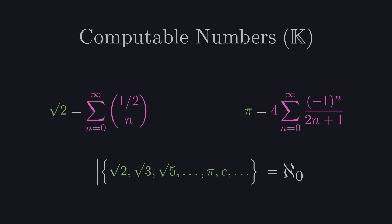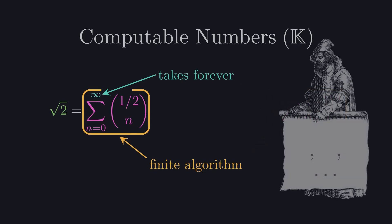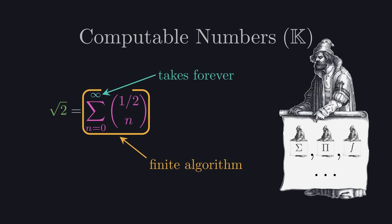For a number to be computable, it's fine if the computation takes forever. It just needs to be possible to write the algorithm with a finite number of symbols. And because the algorithms need to be finite, we can make a big list of such finite algorithms, which is therefore going to be countably infinite.